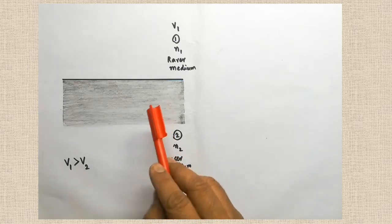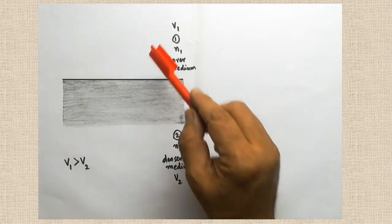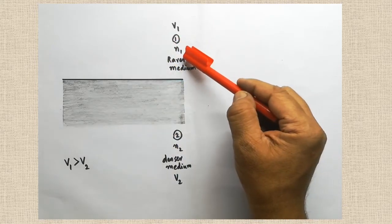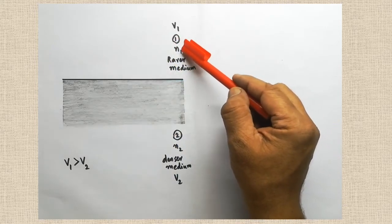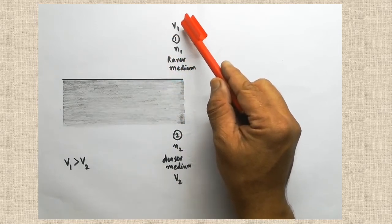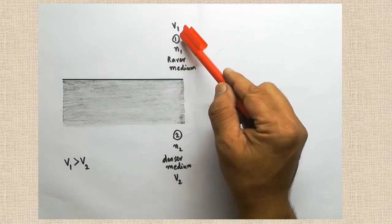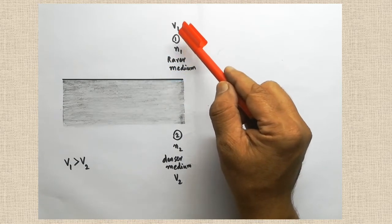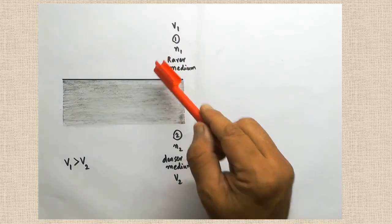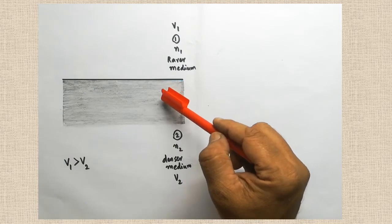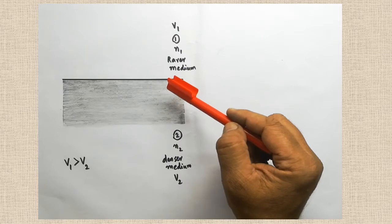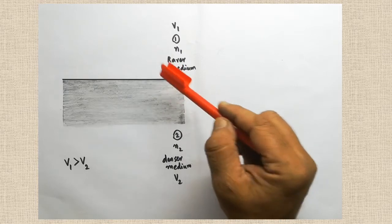Here, look at the diagram. In this diagram, two mediums are drawn. Just above the denser medium, rarer medium is there. The rarer medium refractive index is N1. When light travels through the rarer medium, its velocity can be taken as V1. The first medium is assigned the number 1.